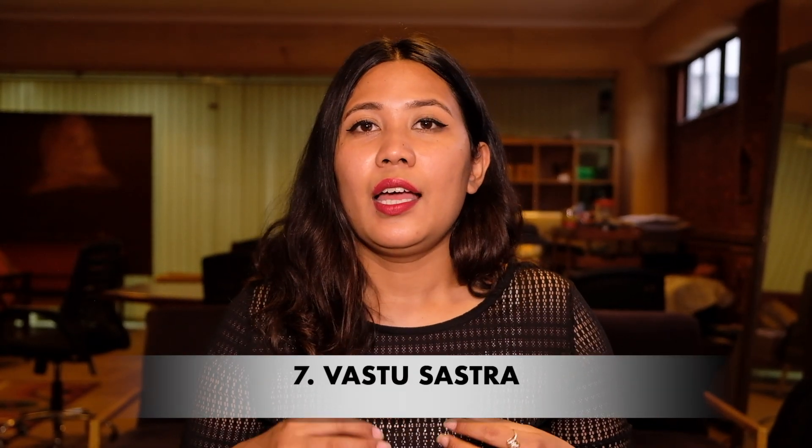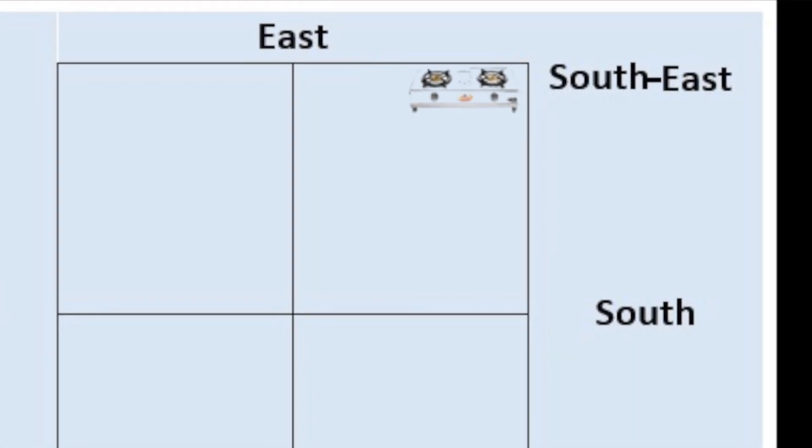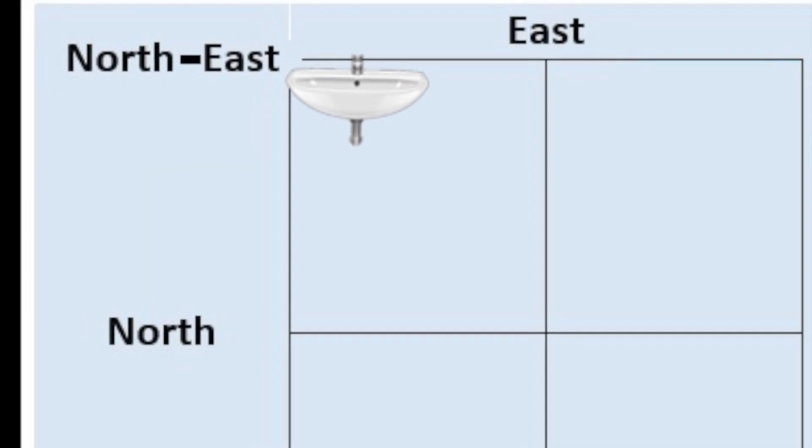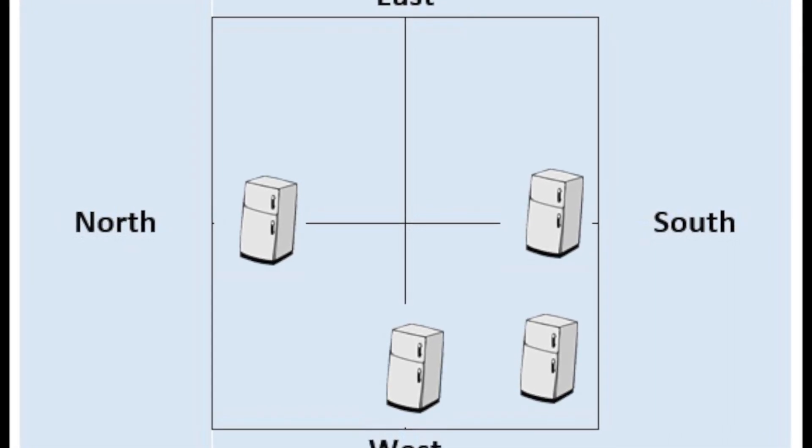Number 7 is Vastu Shastra. The three main components of the working triangle also determine placement according to Vastu Shastra. Your chimney and gas stove should always be on the east or mainly the south-east side, as that corner is designated for hot things. Your sink should always be on the north-east side, because it is the jal corner — the water corner and cold area. Your fridge should always be on the south, north, west, or south-west areas.